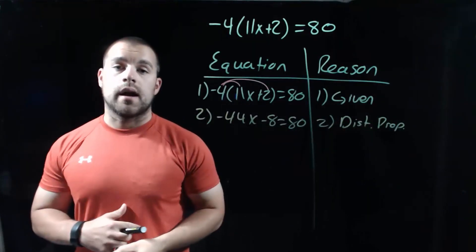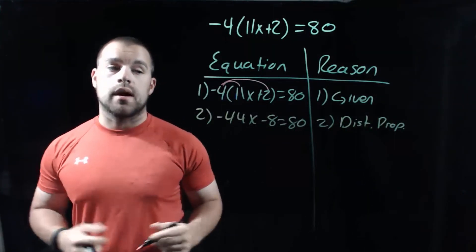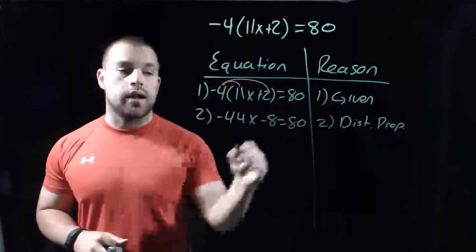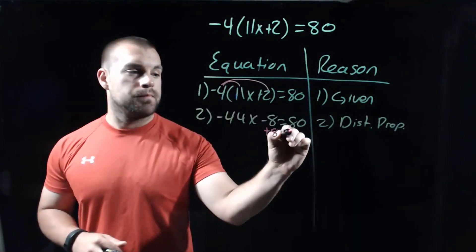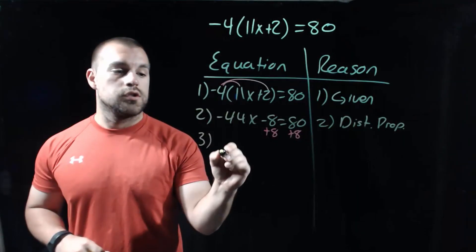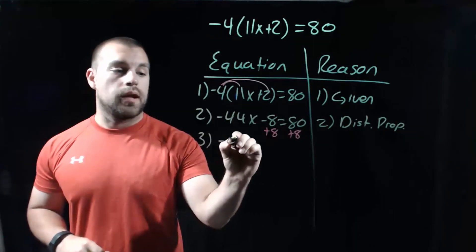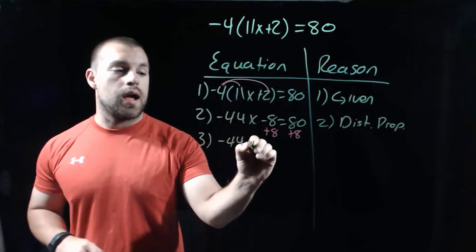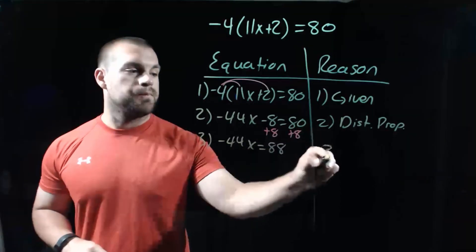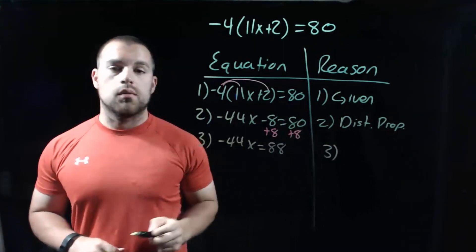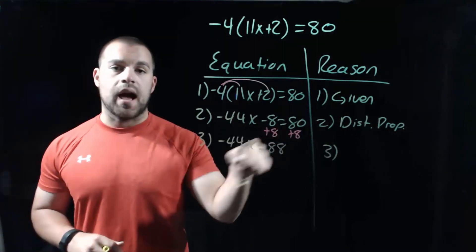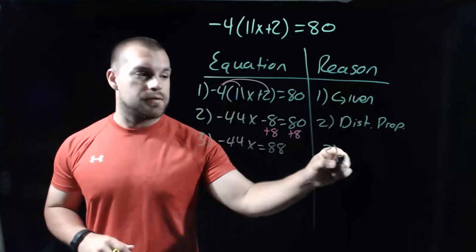Now solving for x, the next thing we're going to have to do is add this 8 over to the right-hand side. So then we end up with negative 44x equals 88. And our reason there is the addition property since we added on both sides.